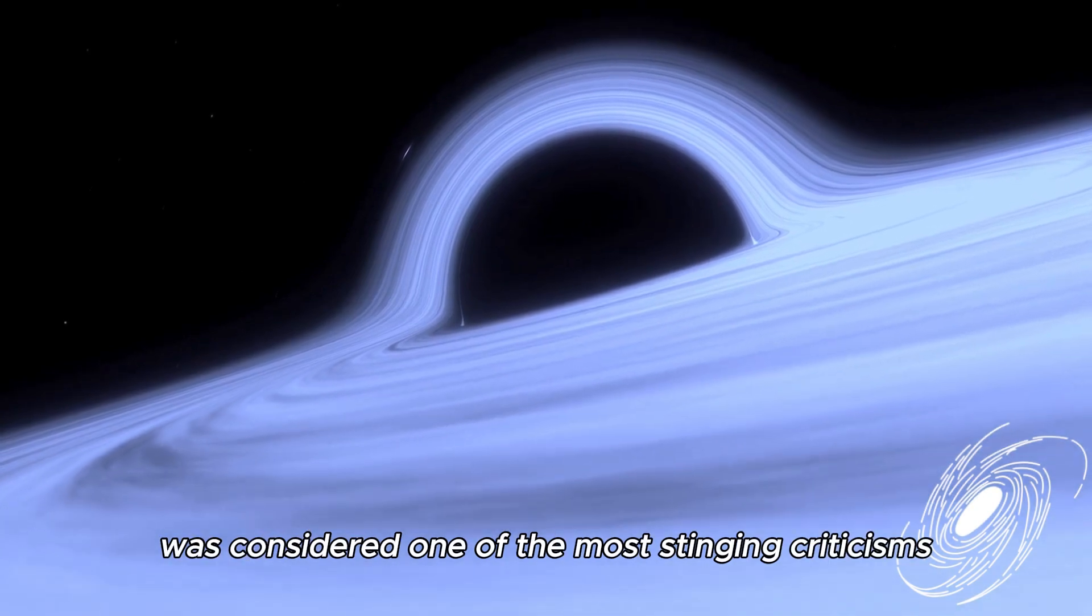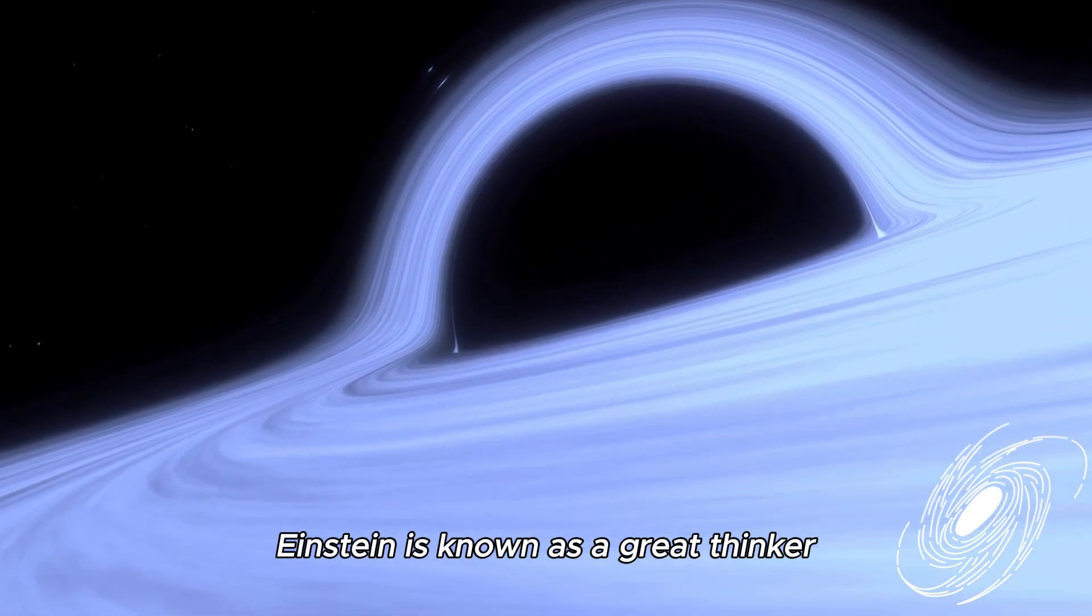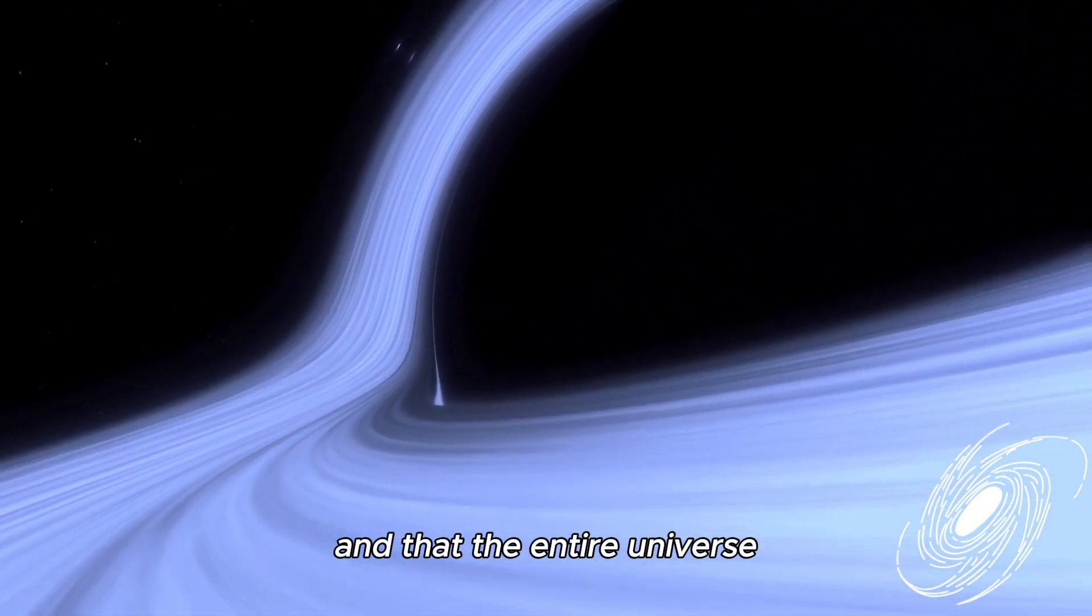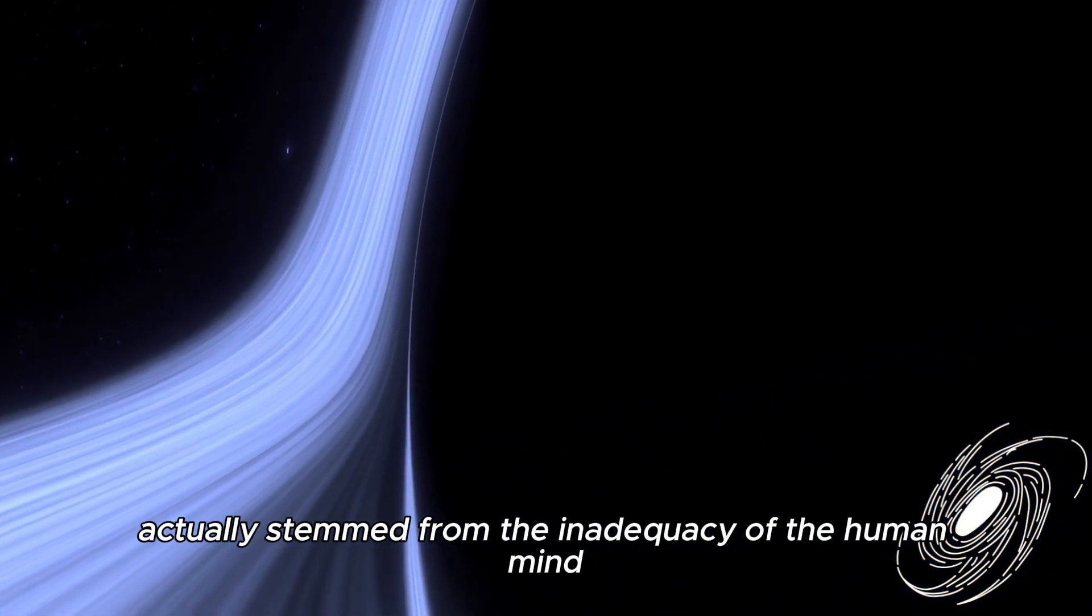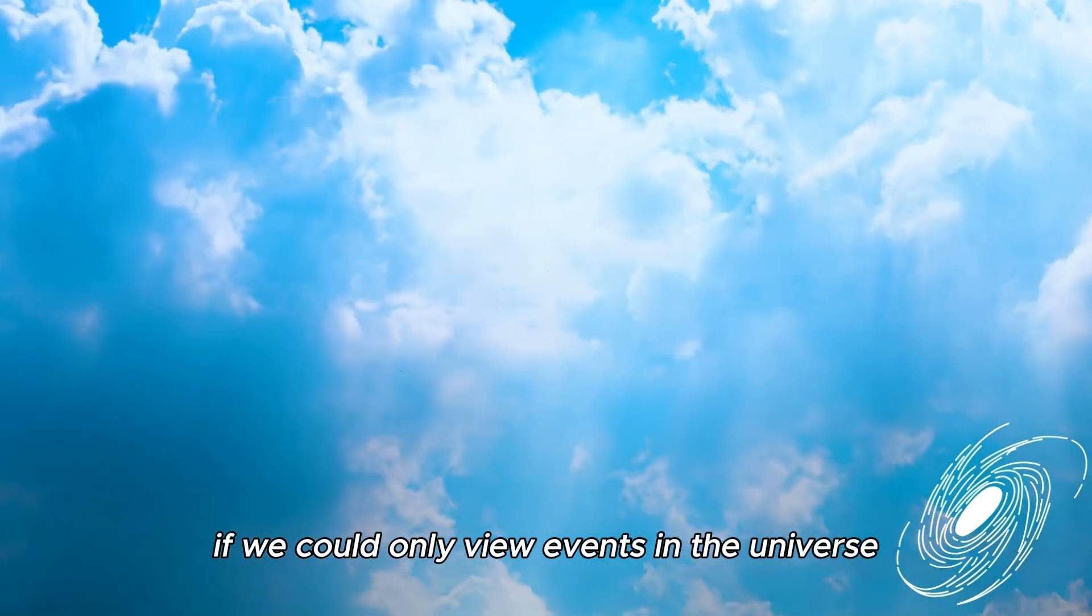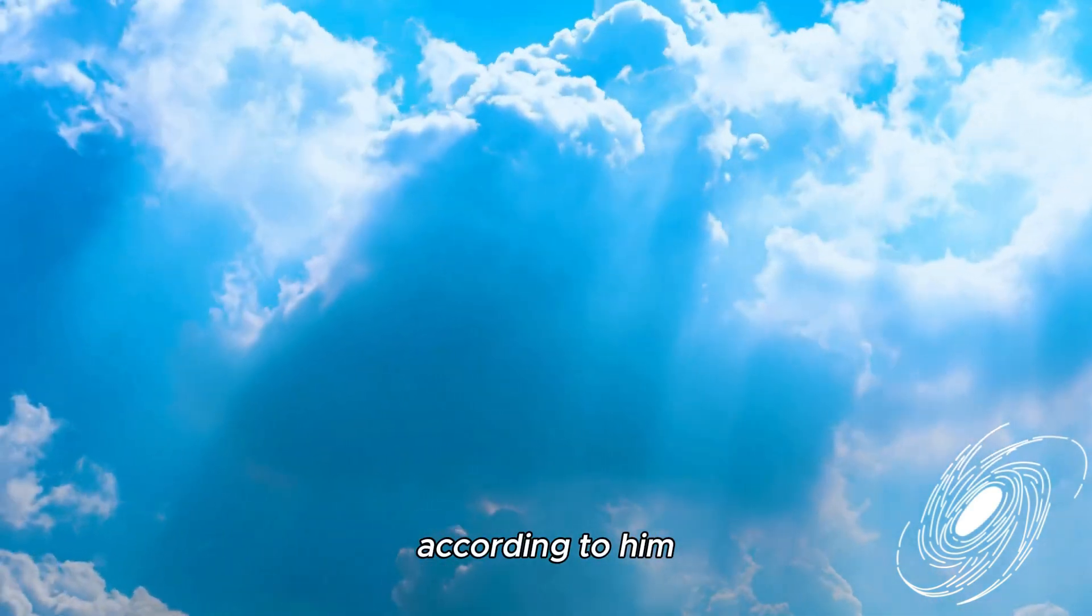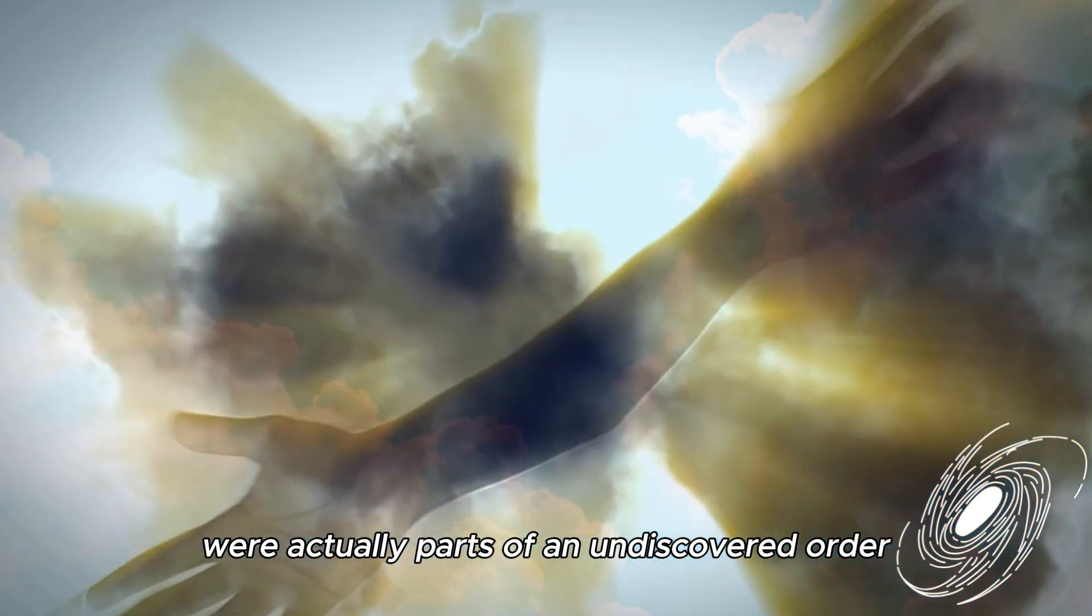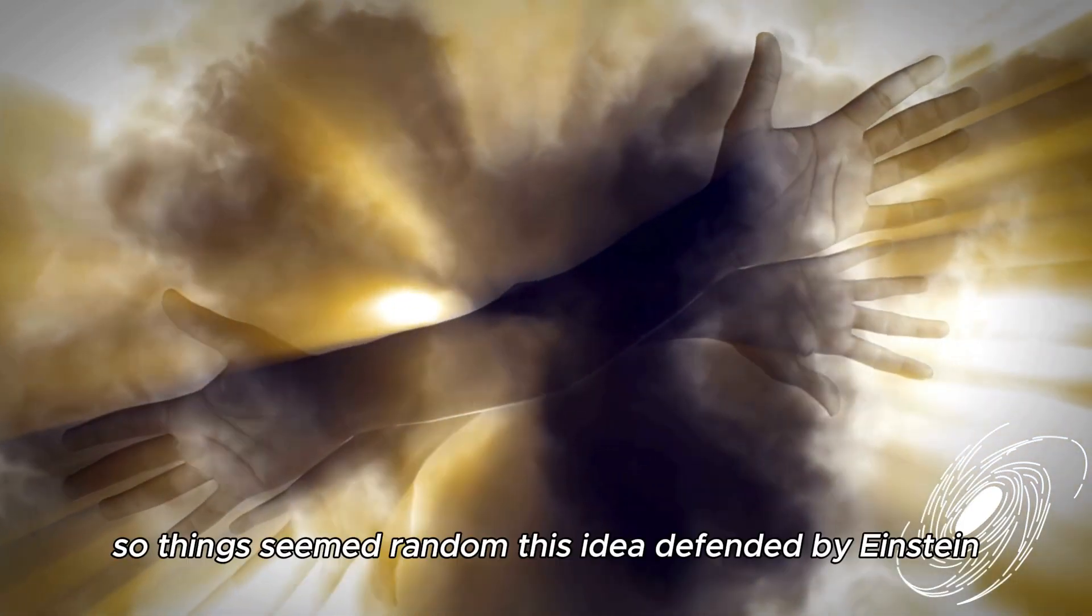This comment by Hawking was considered one of the most striking criticisms made against Einstein in the scientific world. Einstein is known as a great thinker who argued that the events in nature are completely understandable and that the entire universe operates in a certain order. For him, the concept of coincidence actually stemmed from the inadequacy of the human mind. Einstein believed that if we could only view events in the universe from a broader perspective, we could figure out the cause and workings of everything. According to him, the uncertainties encountered in quantum mechanics were actually parts of an undiscovered order. The universe had an order and functioning that human beings had not yet achieved, so things seemed random.